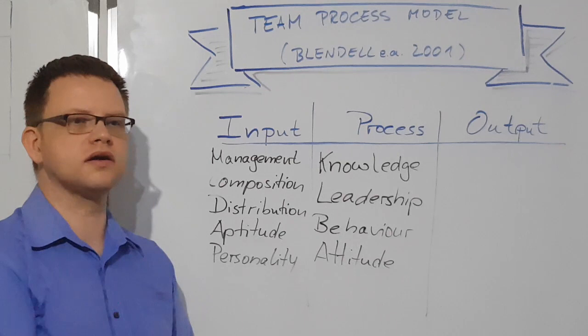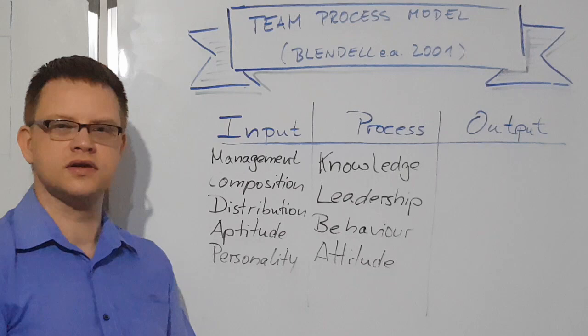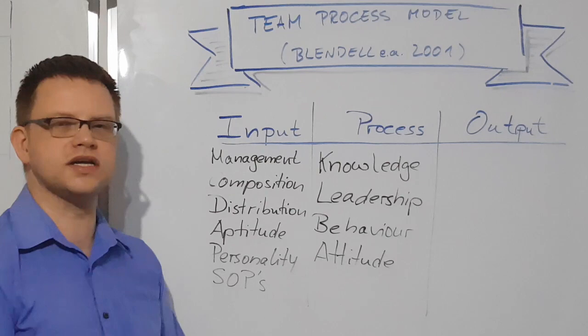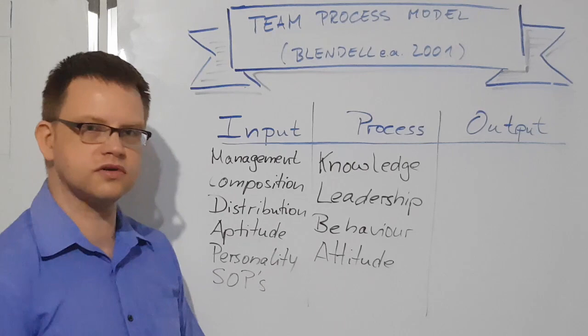Do people get along? Are they open to communicate with each other? Are they somehow a kind of mold that can produce results together? And maybe there's from the organization something like SOPs, standard operation procedures, processes that the team needs to follow that constrain their freedom in delivering results. Those are external factors that affect the team and internal factors within the team.